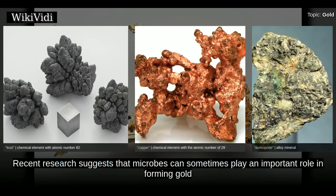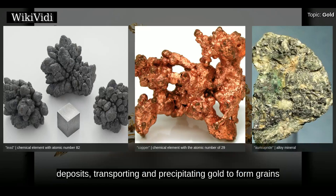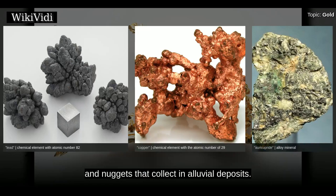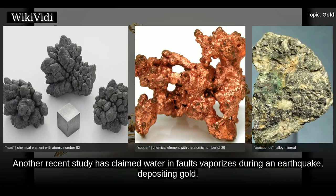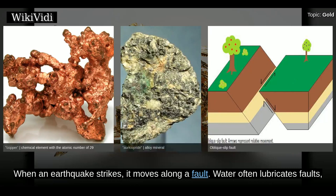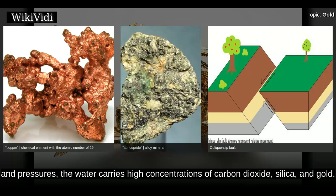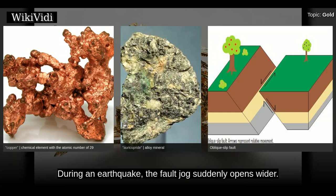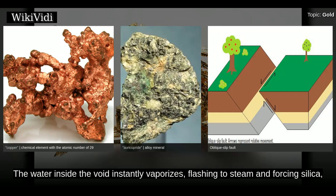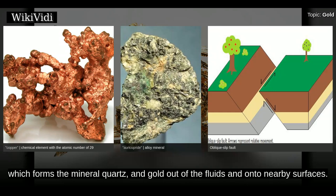Recent research suggests that microbes can sometimes play an important role in forming gold deposits, transporting and precipitating gold to form grains and nuggets that collect in alluvial deposits. Another recent study has claimed water in faults vaporizes during an earthquake, depositing gold. When an earthquake strikes it moves along a fault; water often lubricates faults, filling in fractures and jogs about six miles below the surface under incredible temperatures and pressures. The water carries high concentrations of carbon dioxide, silica and gold. During an earthquake, the fault jog suddenly opens wider; the water inside vaporizes, flashing to steam and forcing silica — which forms the mineral quartz — and gold out of the fluids and onto nearby surfaces.